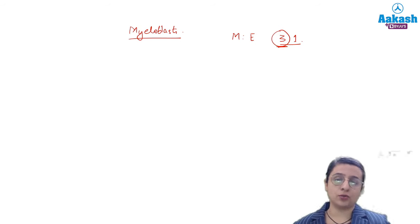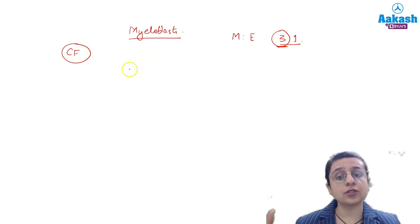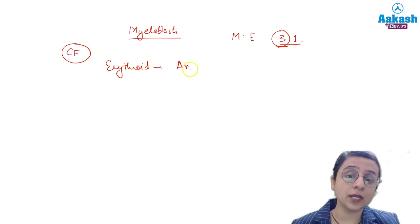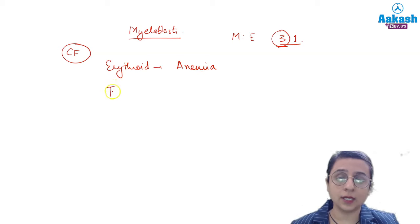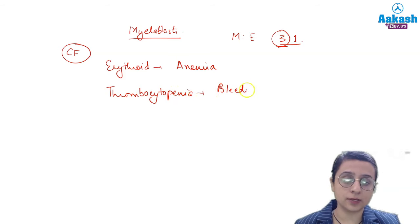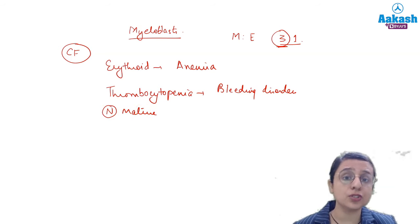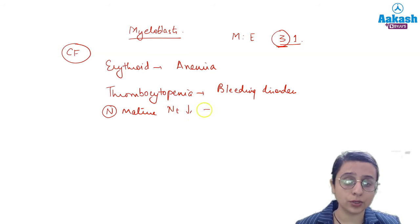What will be the clinical presentation? The patient will present with suppression of normal bone marrow precursors. If there is suppression of erythroid precursors, that will lead to anemia — fatigue, tiredness. If there is suppression of megakaryocytic lineage, there will be thrombocytopenia, and the patient may present with bleeding disorders. Because normal mature neutrophils are not being formed, there is a risk of infections.